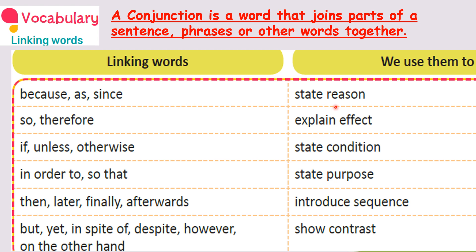You understand? This shows the reason. You give a reason for not doing something. Clear. The next ones are 'so' and 'therefore.' Where do we use so and therefore? To explain effect — the outcome.